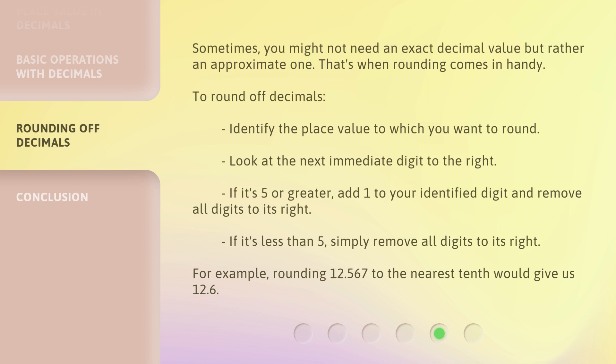To round off decimals, identify the place value to which you want to round. Look at the next immediate digit to the right. If it's 5 or greater, add 1 to your identified digit and remove all digits to its right. If it's less than 5, simply remove all digits to its right.